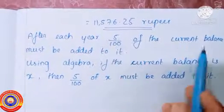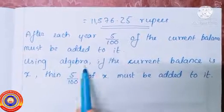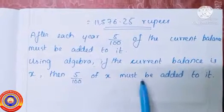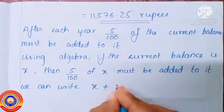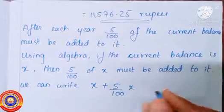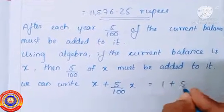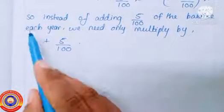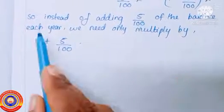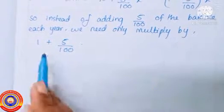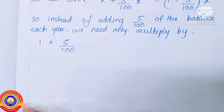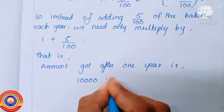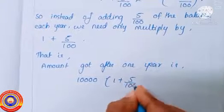After each year, 5 by 100 of the current balance must be added to it. So using algebra, if the current balance is x, then 5 by 100 of x must be added to it. We can write x plus 5 by 100 into x, which equals x times one plus 5 by 100. So instead of adding 5 by 100 of the balance each year, we need only multiply by one plus 5 by 100. The amount after one year is ten thousand into one plus 5 by 100.